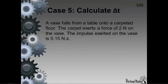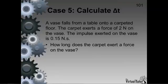A vase falls from a table onto a carpeted floor. The carpet exerts a force of 2 newtons on the vase. The impulse exerted on the vase is 0.15 newton-seconds. How long does the carpet exert a force on the vase?